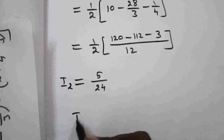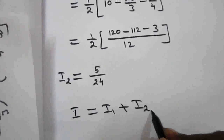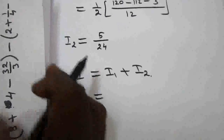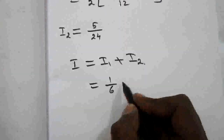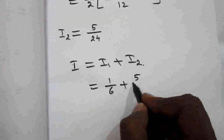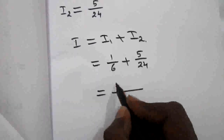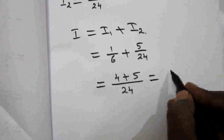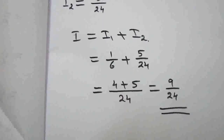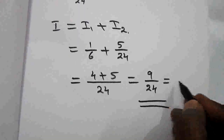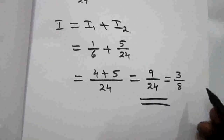The given integral I equals I1 plus I2. We found I1 equal to 1/6 and I2 equal to 5/24. So 1/6 plus 5/24: taking LCM 24 gives 4 plus 5 equals 9 by 24, which simplifies to 3 by 8. So the final answer is 3 by 8.